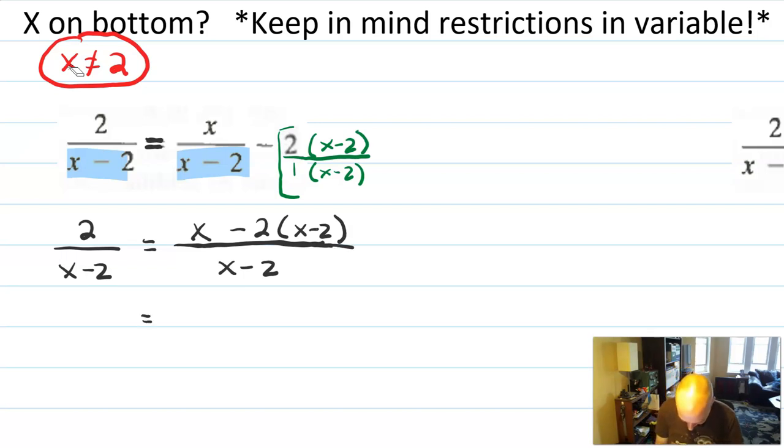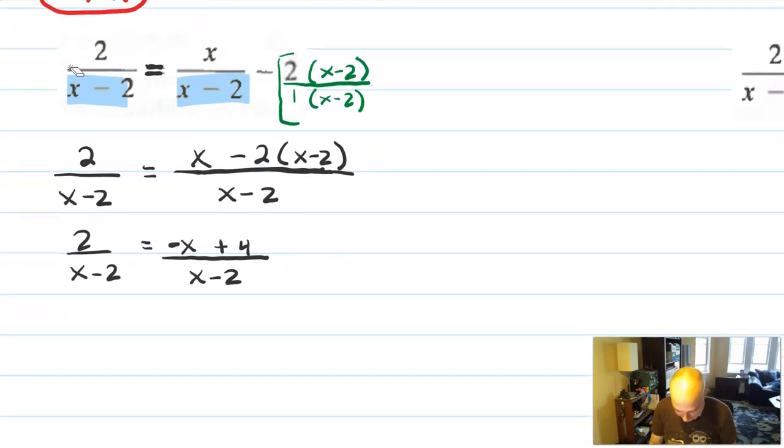Let's simplify that. So that'll be minus 2x plus x. So that's going to be minus 1x altogether. And then minus 2 times minus 2 is going to be plus 4. So, I have minus x plus 4 over x minus 2. Now, I still have this equation, but I have a single term on each side.